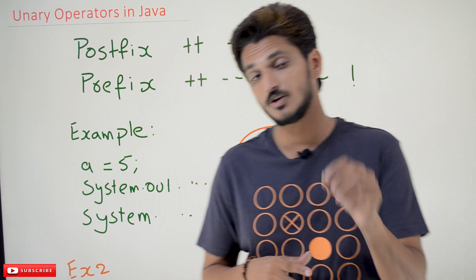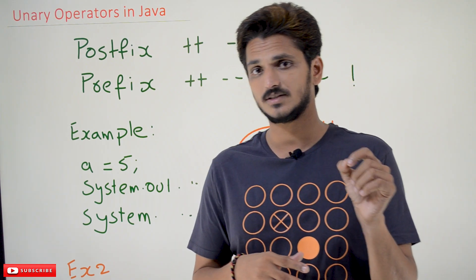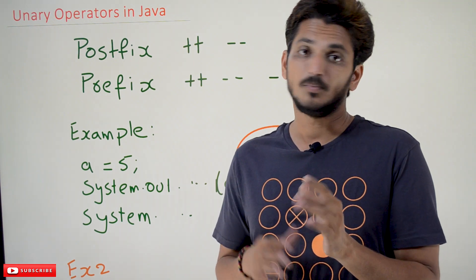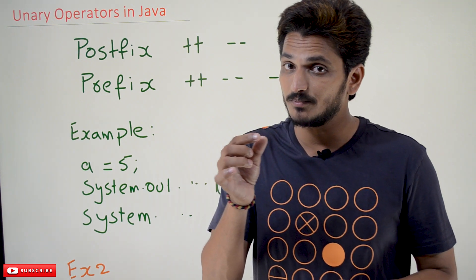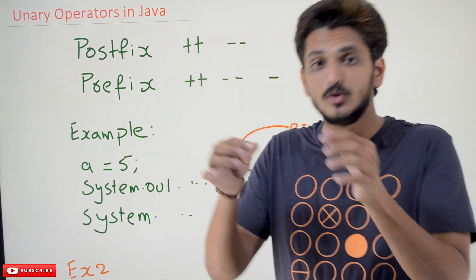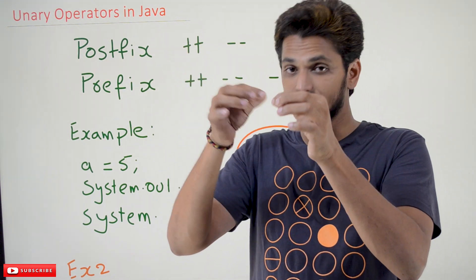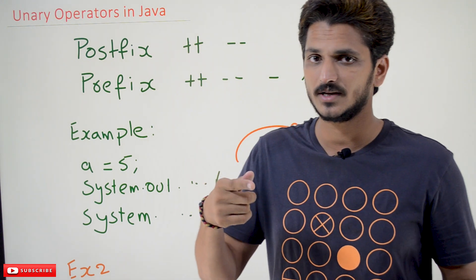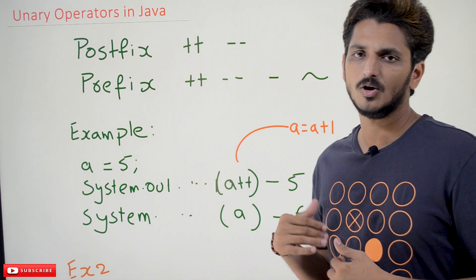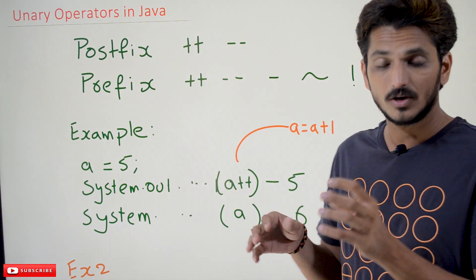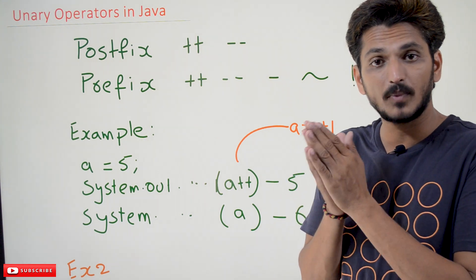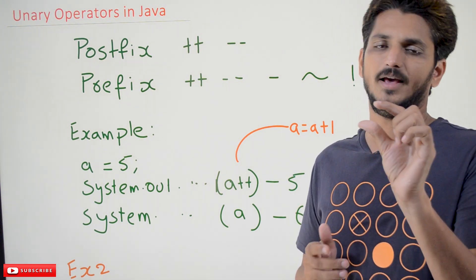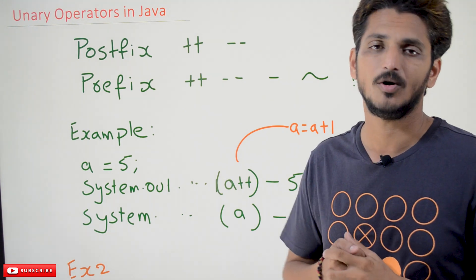Whatever operators we discussed in our previous classes, they are binary operators. A binary operator is applied between two operands — if it is applied between two operands, we call it a binary operator. Now coming to the unary operator: unary operators are applied for a single operand, and then we call them unary operators.